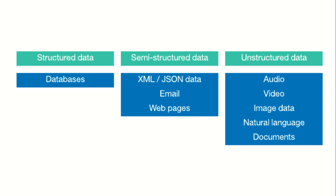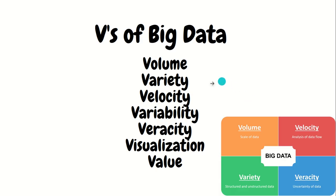Moving on to the V's of big data — a very important topic that comes up whenever you search for big data. The first V is Volume: the scale of data measured in GB, TB, or PB. The second V is Variety: data today is a mix of everything.